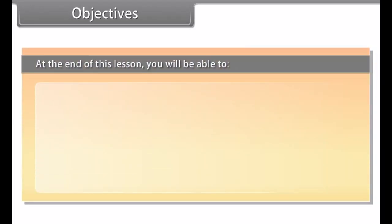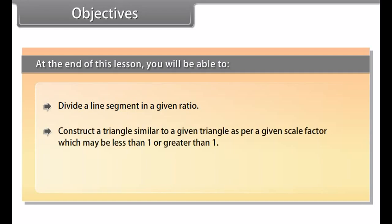At the end of this lesson you will be able to divide a line segment in a given ratio, construct a triangle similar to a given triangle as per a given scale factor which may be less than 1 or greater than 1, and construct a pair of tangents from an external point to a circle.